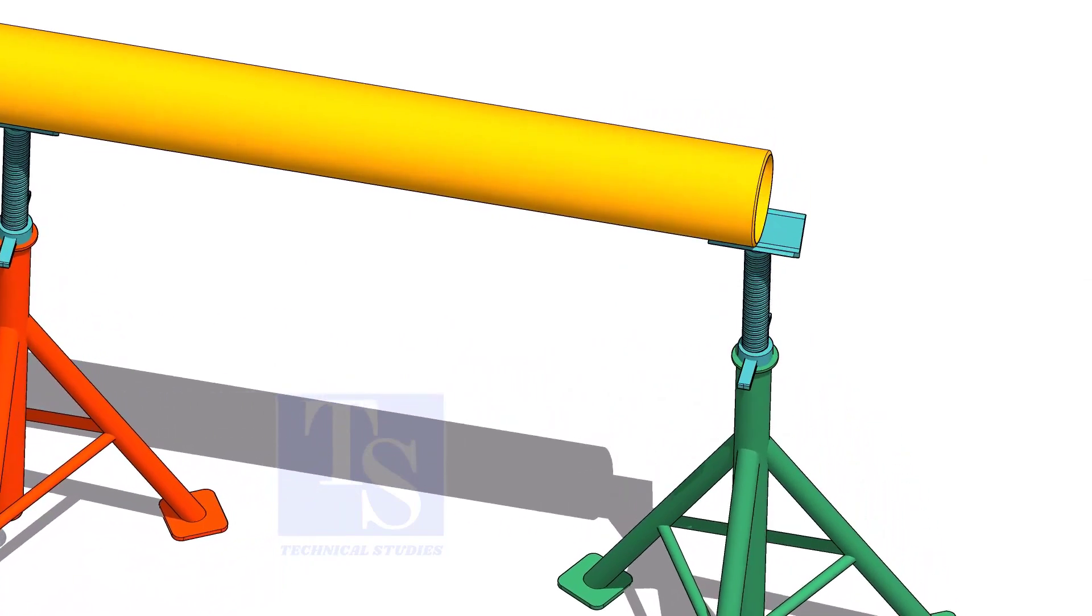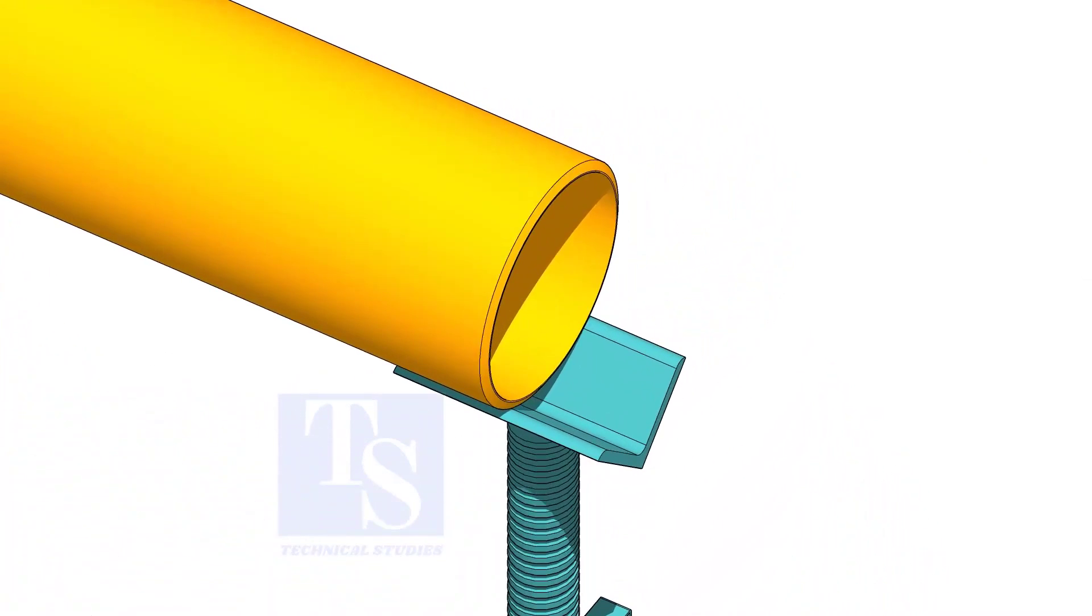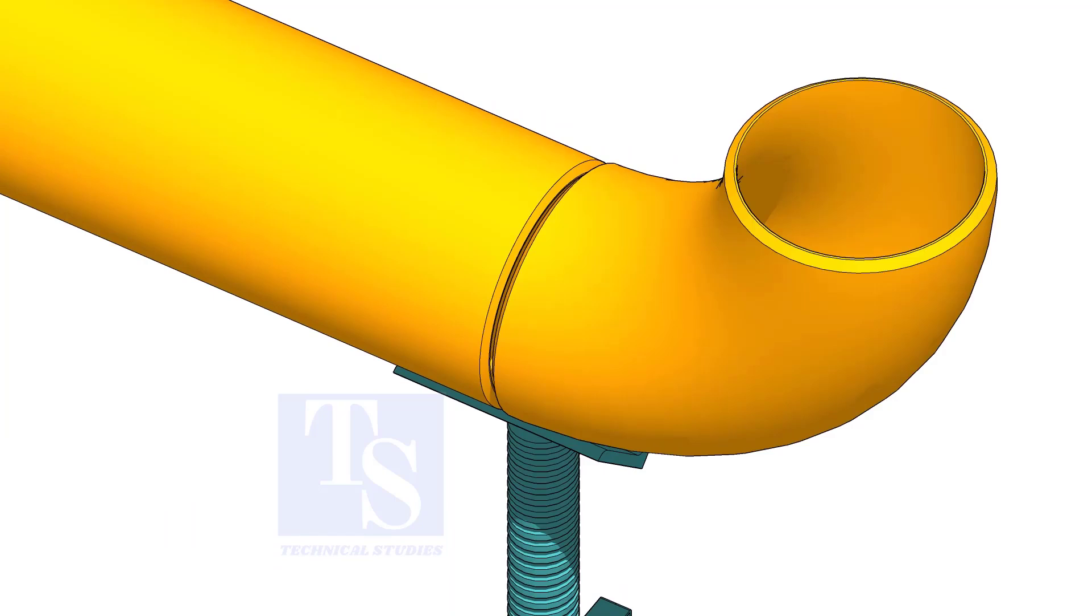Put the pipe on stands and level it. Put the elbow and the gap rod. Correct the overlap and tack weld on both sides.